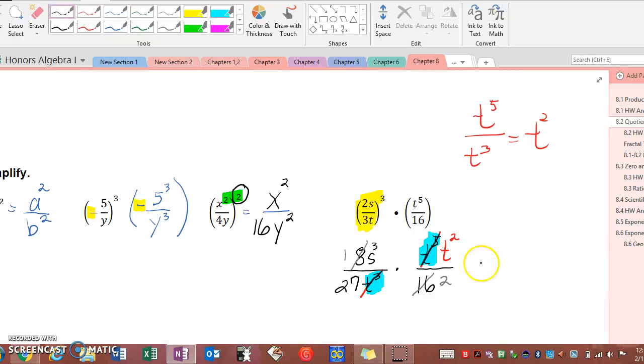So our final answer in the numerator we have 1 times s to the third times t to the second, s cubed t to the second. In the denominator we have 27 times 2 which is 54, and that's our final answer.